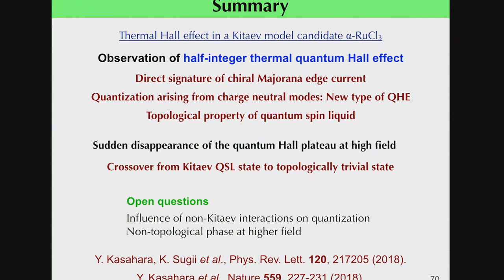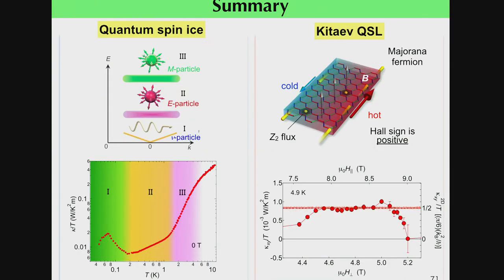These lead to future issues. Via thermal conductivity and thermal Hall conductivity, several new types of emergent quasi-particle excitations are detected in quantum spin ice and quantum spin liquid. Thank you for your attention.